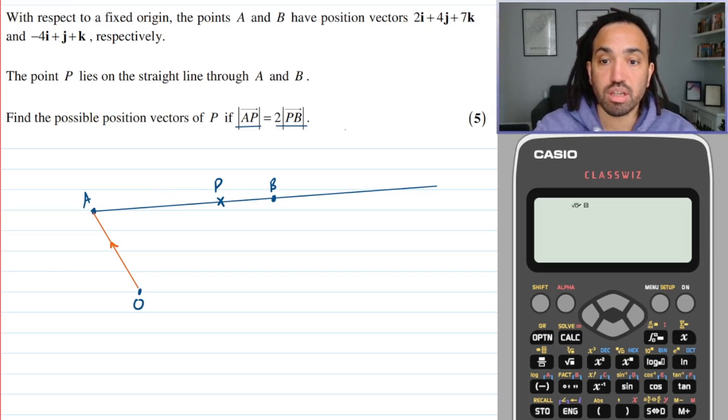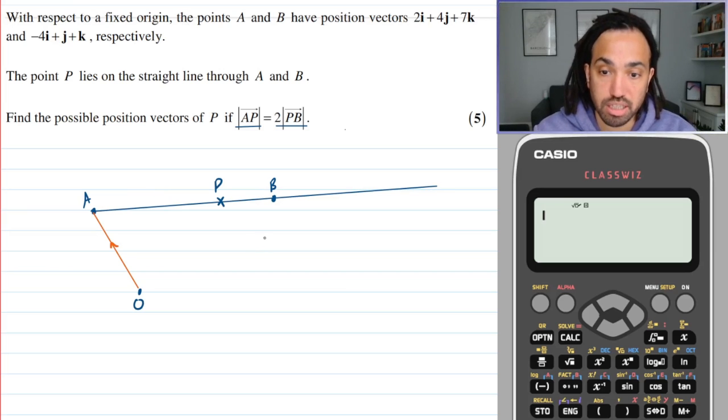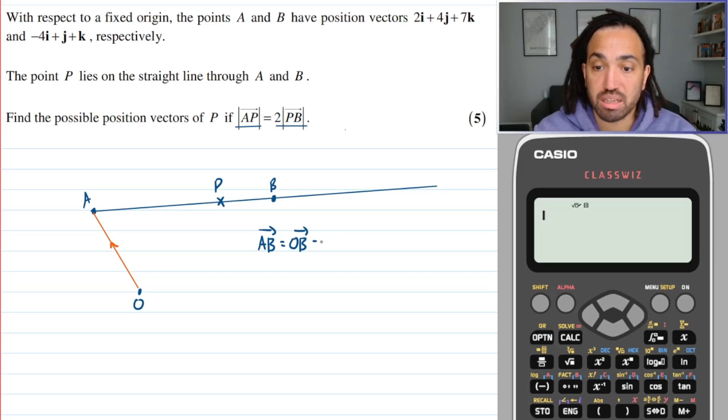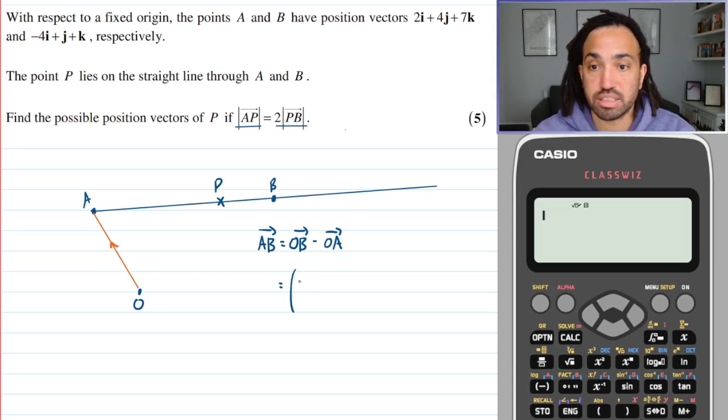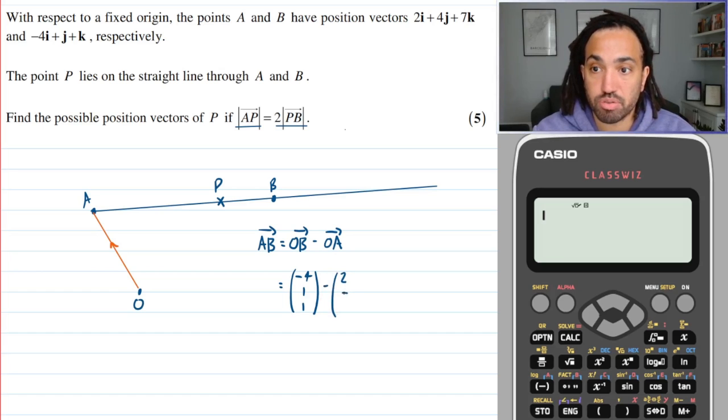Okay, so what are we going to need? We're going to need the vector A to B which we can calculate by doing OB minus OA like that. Now I like to do my vectors in a column method. In this instance B would be minus 4, 1, 1 and A would be 2, 4, 7 and this would give me a column of minus 6, minus 3, minus 6. Okay, lovely.